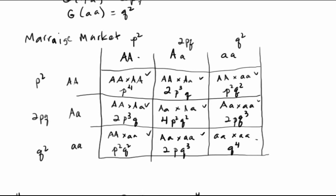In the previous video I demonstrated that if we have a non-evolving population at p-squared, 2pq, and q-squared as the genotype frequencies for the three genotypes — big-A big-A, big-A little-a, little-a little-a — in other words, if we start off in Hardy-Weinberg equilibrium, it really won't evolve if we have random mating.